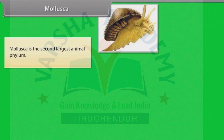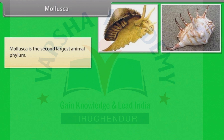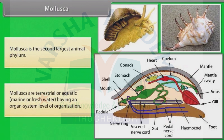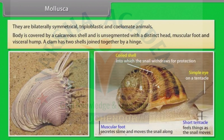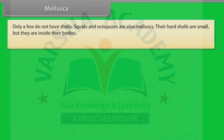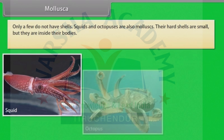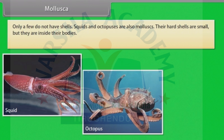Mollusca is the second largest animal phylum. Molluscs are terrestrial or aquatic — marine or freshwater — having an organ system level of organization. They are bilaterally symmetrical, triploblastic and coelomate animals. The body is covered by a calcareous shell and is unsegmented with a distinct head, muscular foot and visceral hump. A clam has two shells joined together by a hinge. Only a few do not have shells — squids and octopuses are also molluscs with small shells inside their bodies.